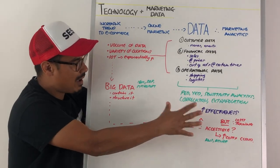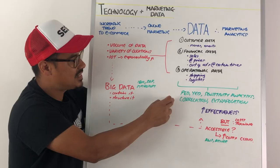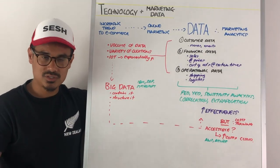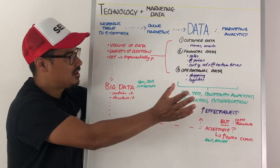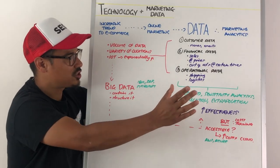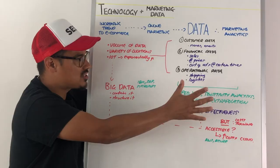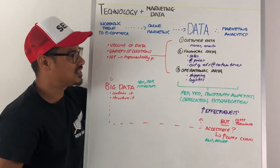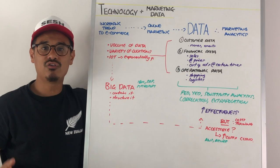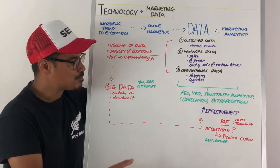If you now have this data and you can access it, then you can do certain types of models, such as price-elasticity of demand, income-elasticity of demand, sensitivity analysis, correlation, and extrapolation. You can do all these types of models, which are types of marketing analytics, to try and increase the effectiveness of your decision-making, which will increase your sales.